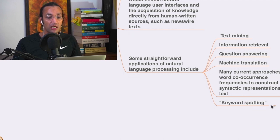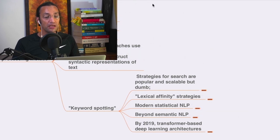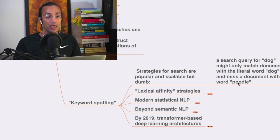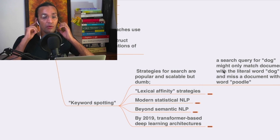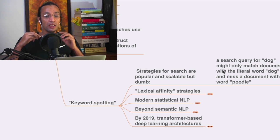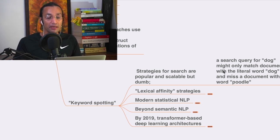Keyword spotting strategies for search are popular and scalable, but limited. A search query for 'dog' might only match documents with the literal word 'dog', and this misses documents with related words such as 'canine'.